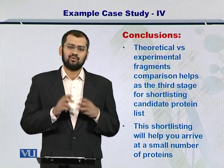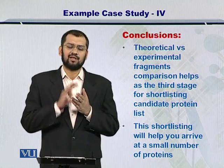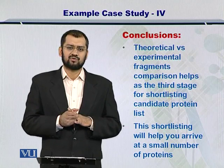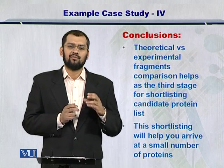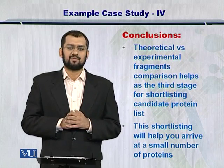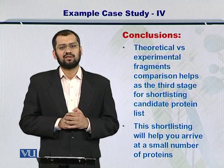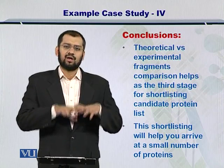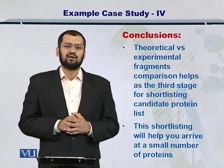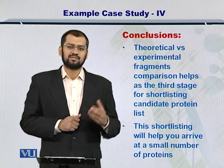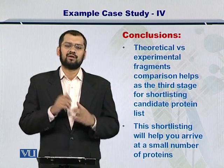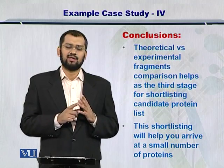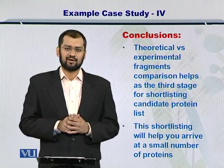Each one of these will help you to shorten your candidate protein list. After going through the third step, you will have a very small candidate protein list. However, there is one thing that is still missing: how can you arrive at an integrated mechanism to compare which scores can be obtained from each part of MS1, MS2, and the in silico experimental spectrum comparison?